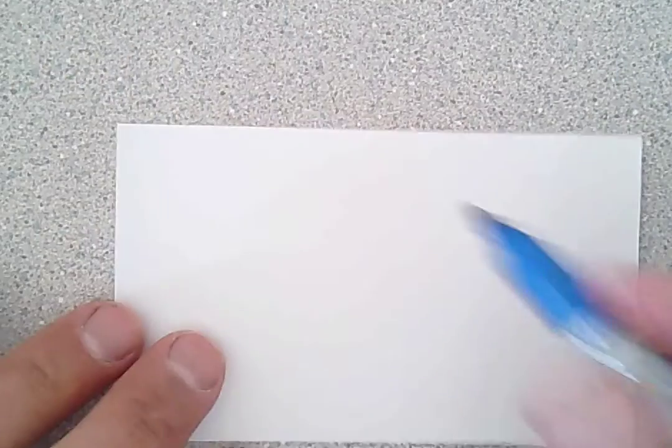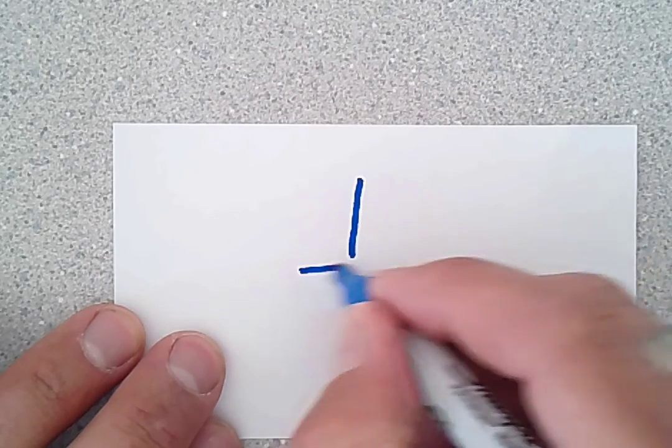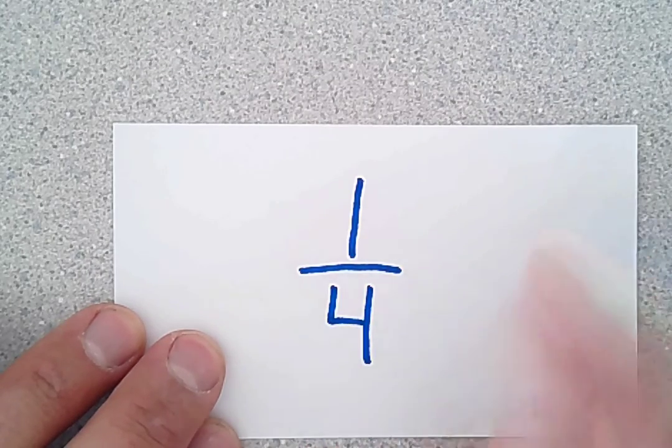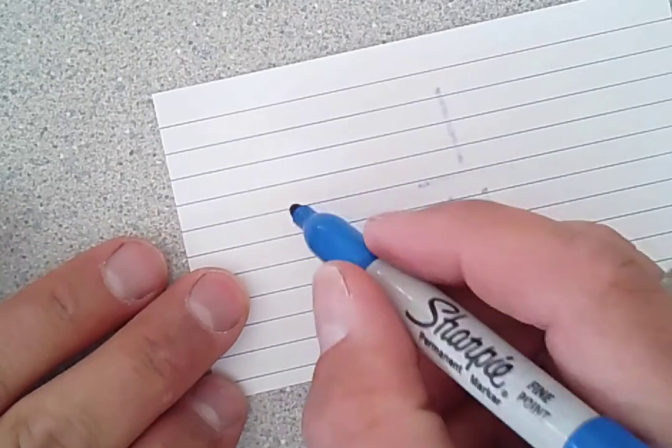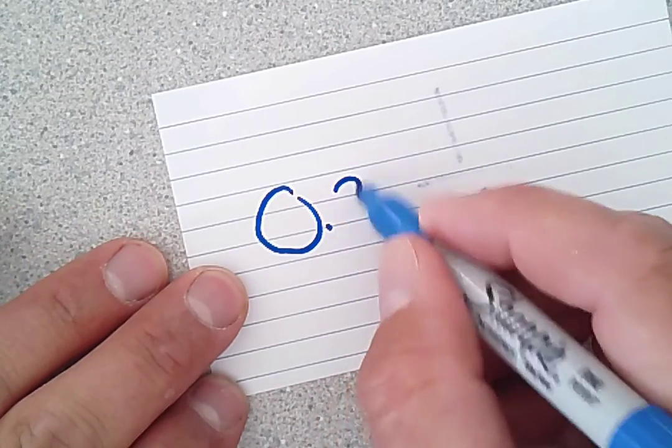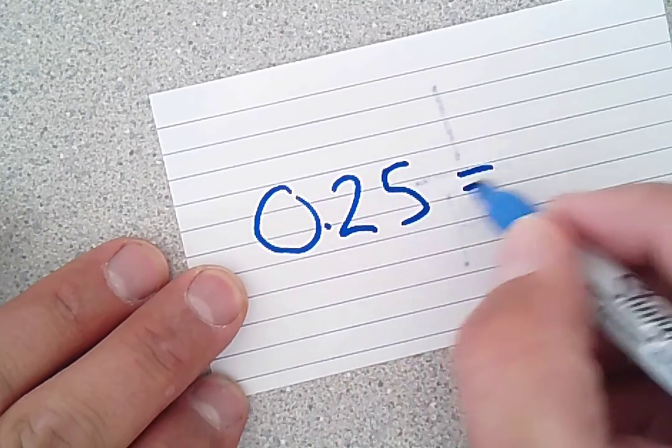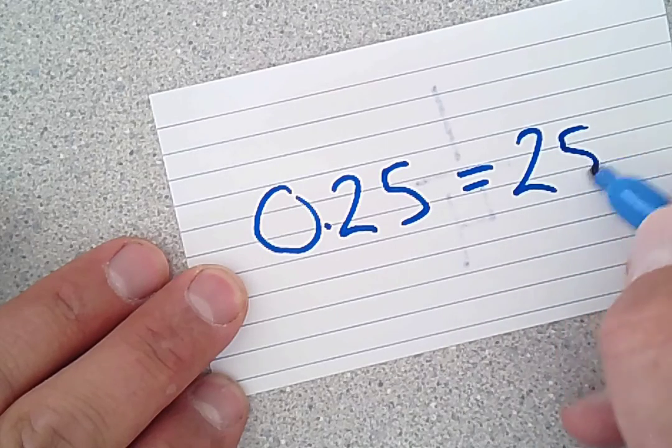And we can just do one more as an example, one fourth. Now, so the fraction goes on one side. Decimal would be 0.25 and 25 percent.